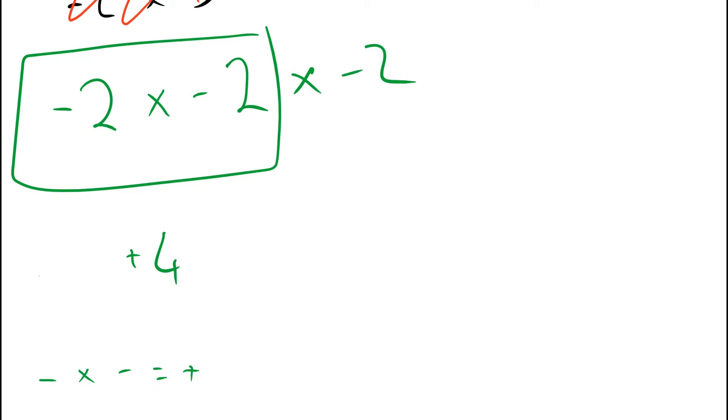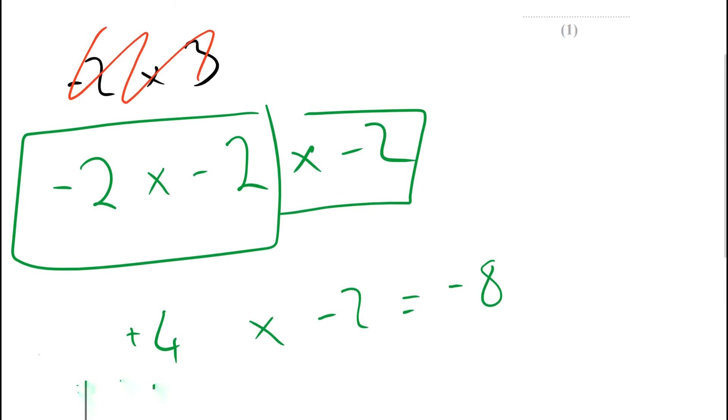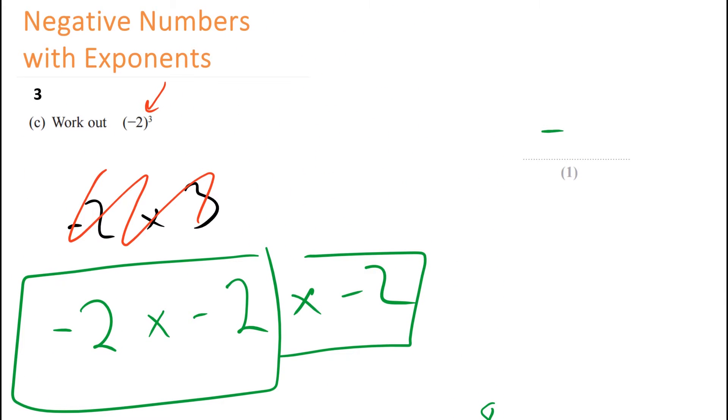Now we do the next times by minus 2. So this answer times by minus 2. The numbers first. So 4 times 2 is 8. A positive times a negative or any time the signs are different we know the answer will be negative. So that would be negative 8. So the answer here is negative 8.